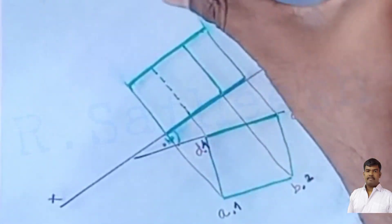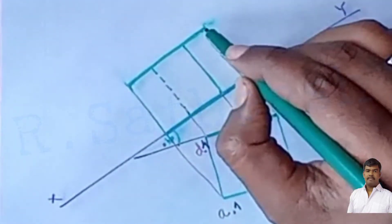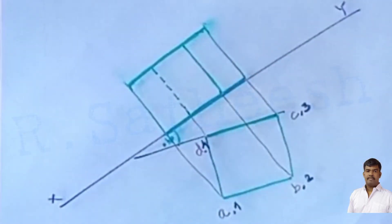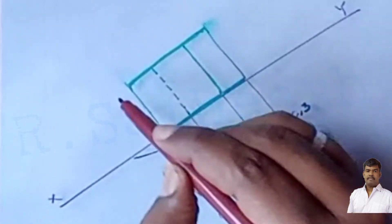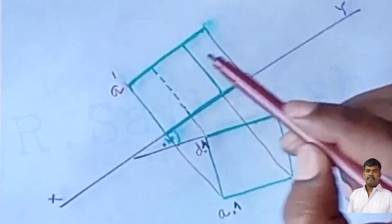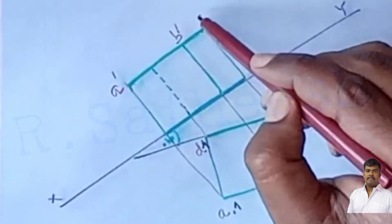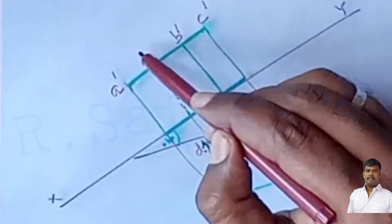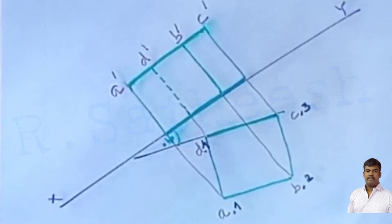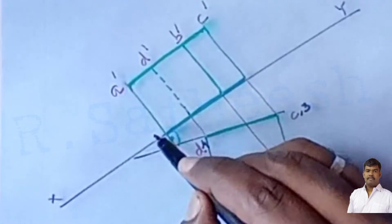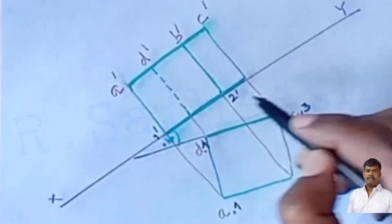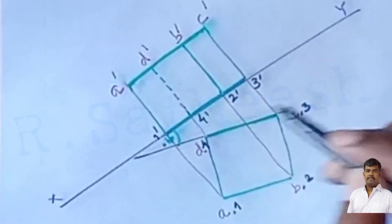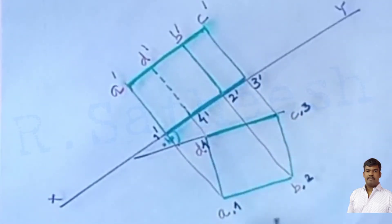This is the solid before sectioning — the top view and front view. In the front view, assign dashed letters: the top surface corners are a-dash, b-dash, c-dash, and d-dash, and the base corners are 1-dash, 2-dash, 3-dash, and 4-dash. The top view shows a square shape and the front view shows a rectangle shape.